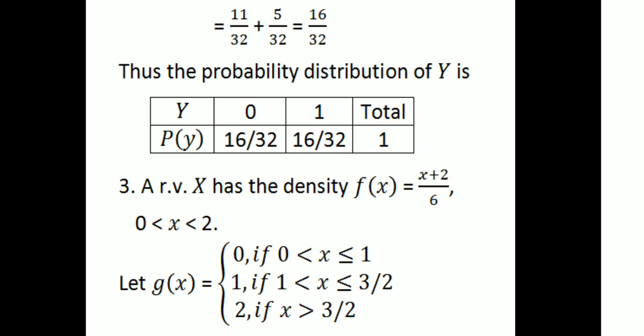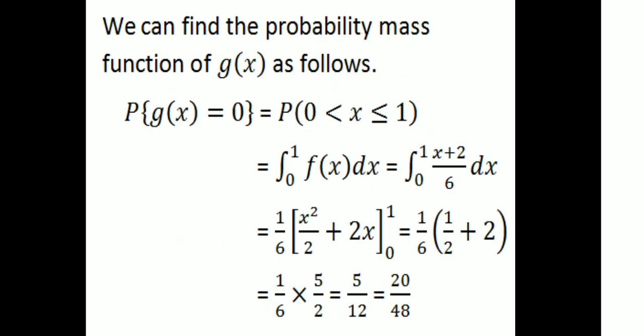Next example: a random variable X has density function f(x) = (x+2)/6 where x varies between 0 and 2. Let g(x) = 0 if 0 < x ≤ 1, g(x) = 1 if 1 < x ≤ 3/2, and g(x) = 2 if x > 3/2. We find the probability mass function of g(x).